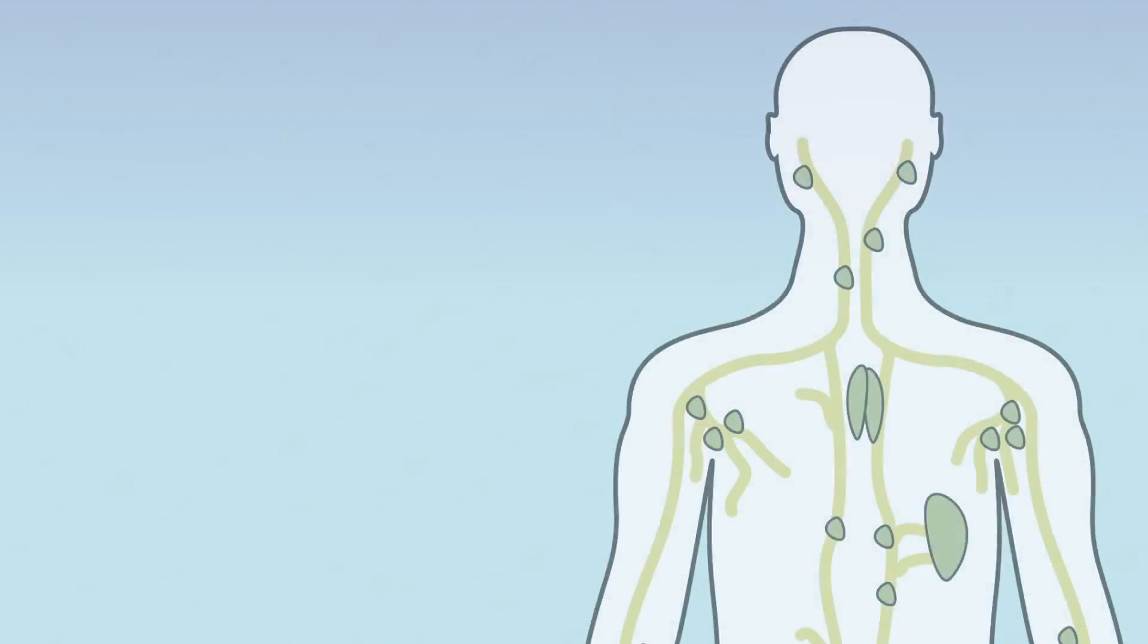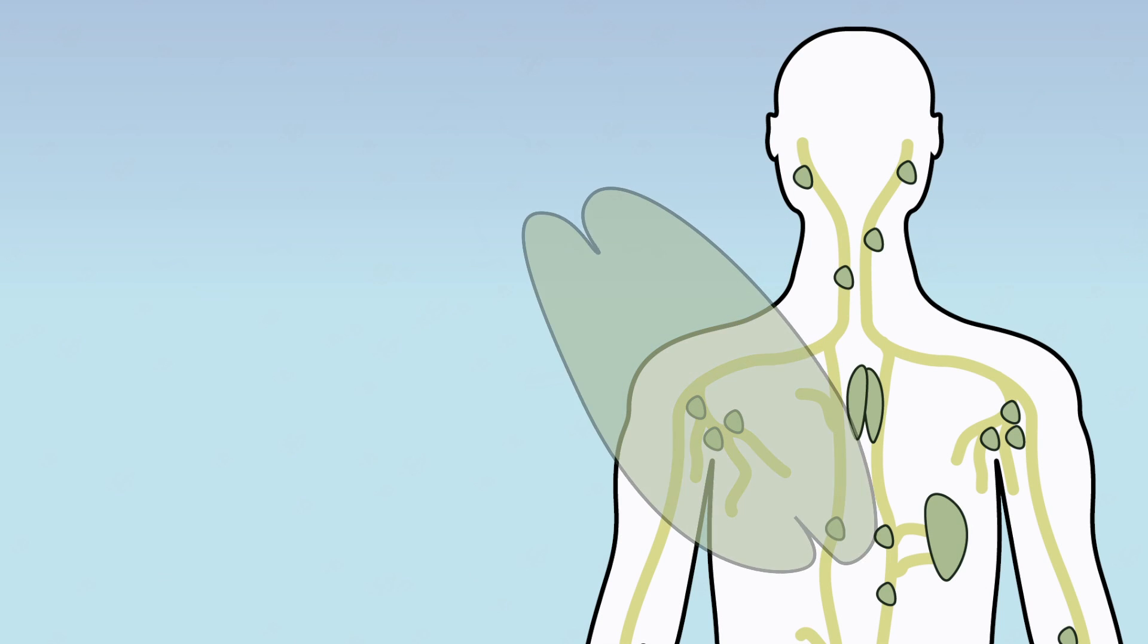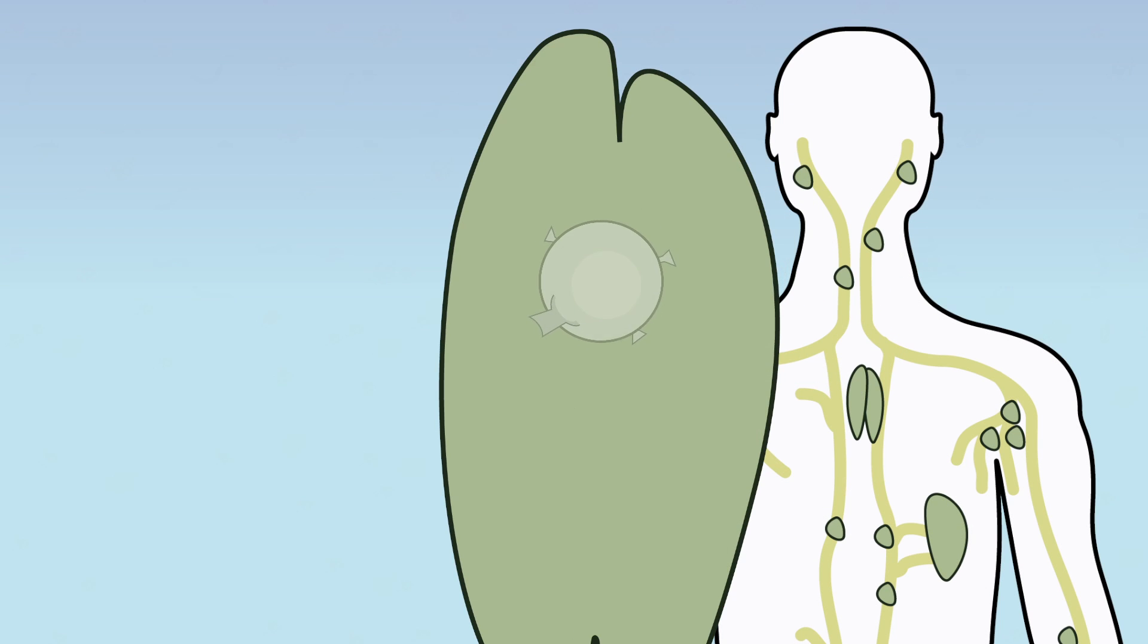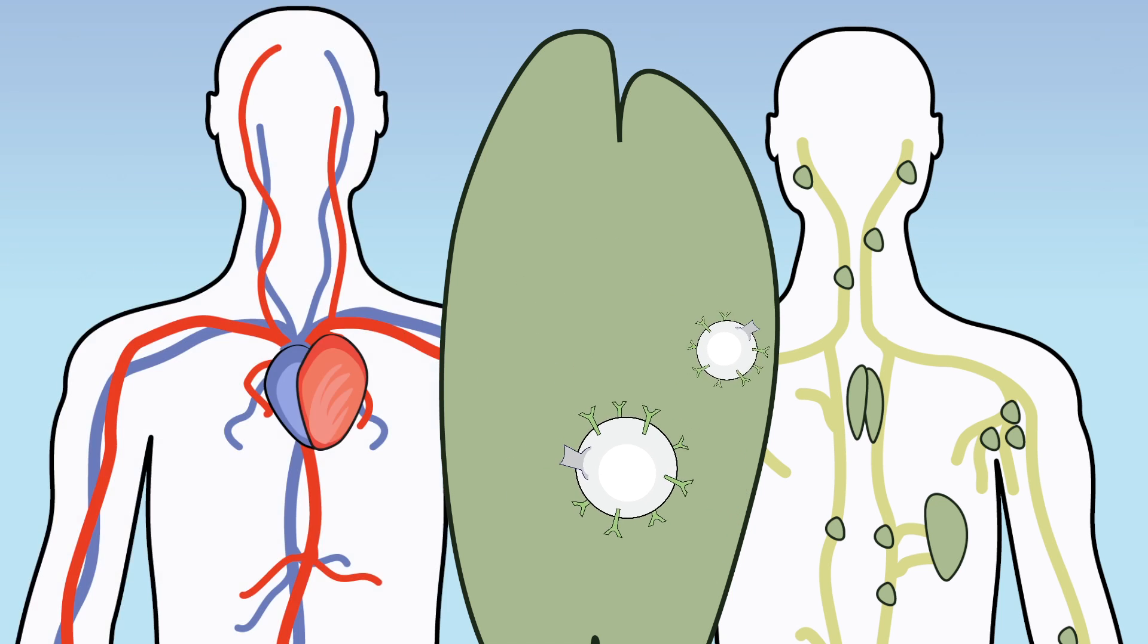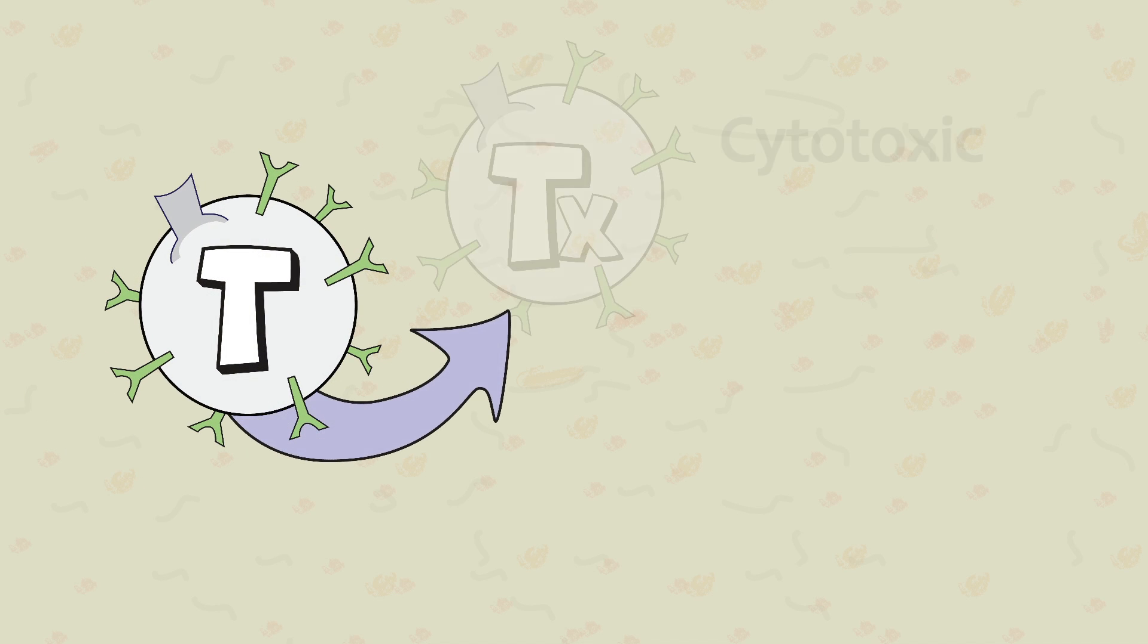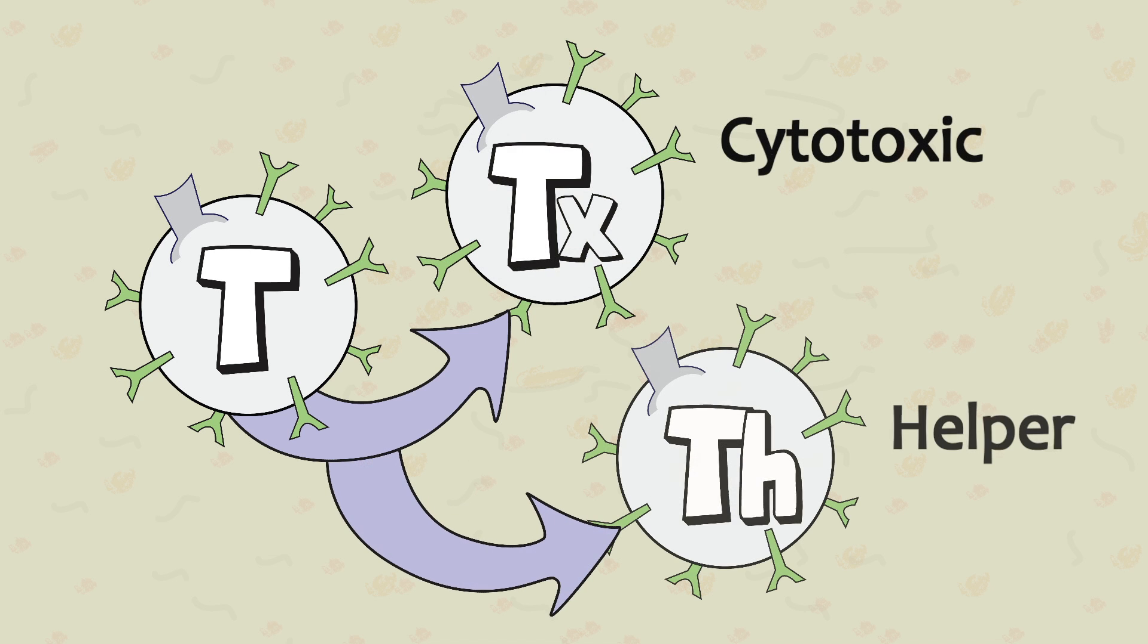T cells are found in the thymus, where they are stored as immature lymphocytes. When called into action, the immature lymphocytes differentiate to match the antigens of the activating cell and are then released into the lymph fluid and bloodstream. There are two primary types of mature T cells: cytotoxic T cells and helper T cells.